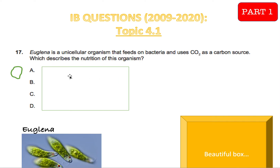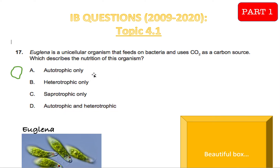I will reveal the options and you can do it by yourself, then I'll explain the answers and why a certain answer is correct and why the rest are wrong. Euglena is a unicellular organism that feeds on bacteria and uses CO2 — carbon dioxide — as a carbon source. Which describes the nutrition of this organism?